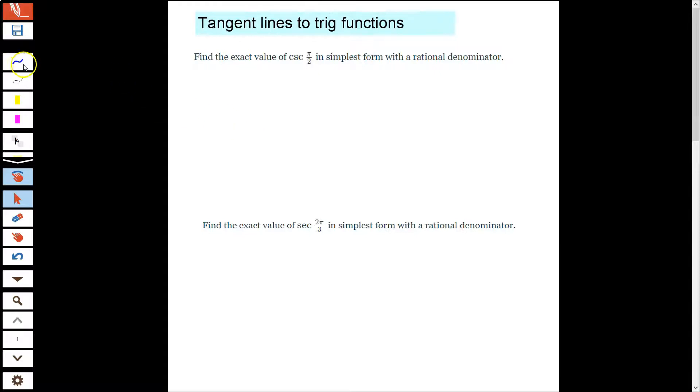In this first example, we have the exact value of cosecant of π over 2. The first thing you need to know is that cosecant is 1 over sine. Remember 1 over is the reciprocal. So cosecant is the reciprocal of sine, not cosine.